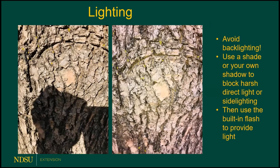Lighting is another problem. Avoid backlighting at all costs — that's when the subject is lit from the back, resulting in bright light in the background and the subject itself being completely dark. There are also times when you'll have harsh direct lighting or, as in the picture on the left, you actually get in the way with your own shadow — that's my shadow while taking a picture of tree bark. What you can do is use the built-in flash: I used my own body shadow to block the harsh light and then used the flash to take the photograph, which eliminated all shadows and harsh highlights. So don't be afraid to use the flash built into your camera — cell phone flashes are really excellent, especially at close range.